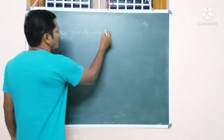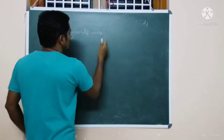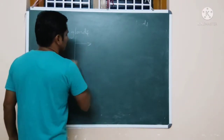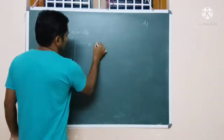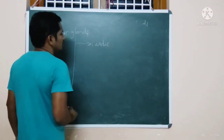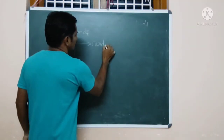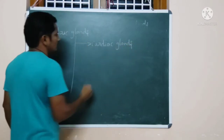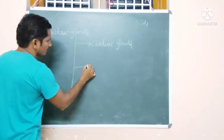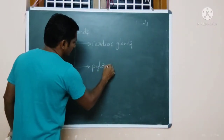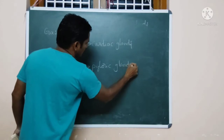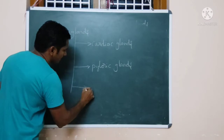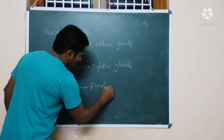These are three kinds. The first gastric gland is the cardiac gland. The second one is the pyloric gland. The last one is the fundic glands.